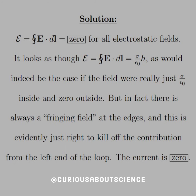The EMF says that the closed integral of E·dl is equal to zero for all electrostatic fields. It looks as though the closed integral of E·dl — the line integral for the EMF — is equal to sigma over epsilon naught times H, as would indeed be the case if the field were really just sigma over epsilon naught inside and zero outside. But in fact, there's always a fringing field at the edges, and this is evidently just right to kill off the contribution from the left end of the loop. Thus, the current is zero.